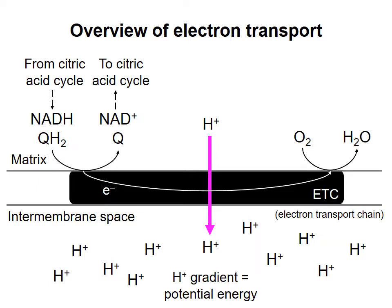So this is the main point of the electron transport chain. The energy from movement of electrons from NADH and QH2 to oxygen is used to generate an electrochemical gradient across the inner mitochondrial membrane.